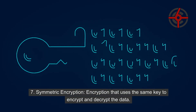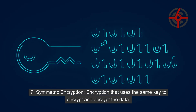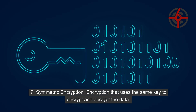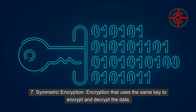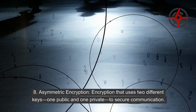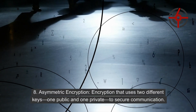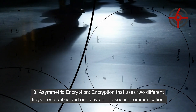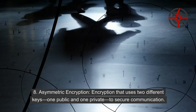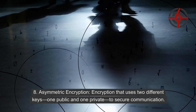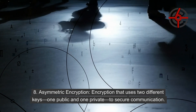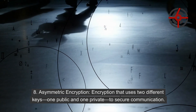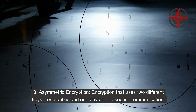7. Symmetric encryption: Encryption that uses the same key to encrypt and decrypt the data. 8. Asymmetric encryption: Encryption that uses two different keys — one public and one private — to secure communication.